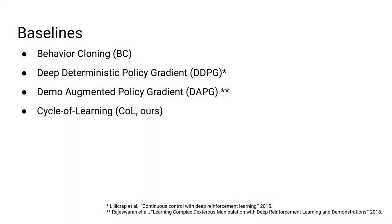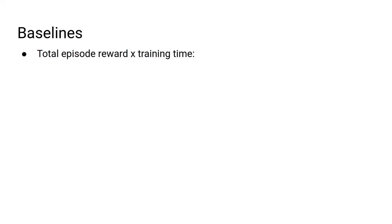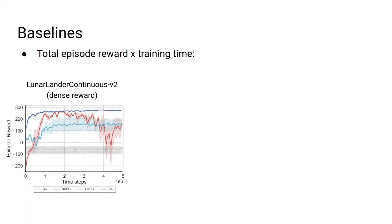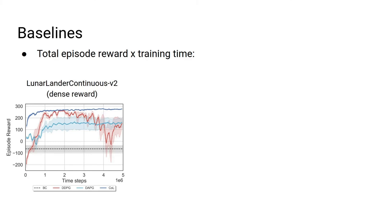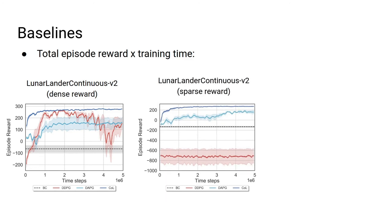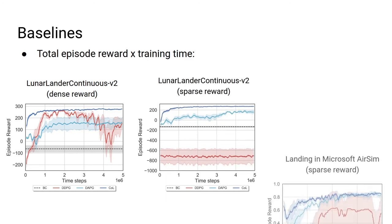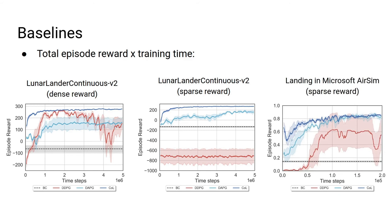As baselines, we compared our method, the Cycle of Learning, against standard behavior cloning, the DDPG reinforcement learning algorithm, and the APG, which also combines demonstration data with reinforcement learning. These plots show how the Cycle of Learning outperforms the baselines in terms of training reward in the Lunar Lander Continuous environment for both dense and sparse reward cases, and also in the custom quadrotor landing task, which uses a sparse reward function.